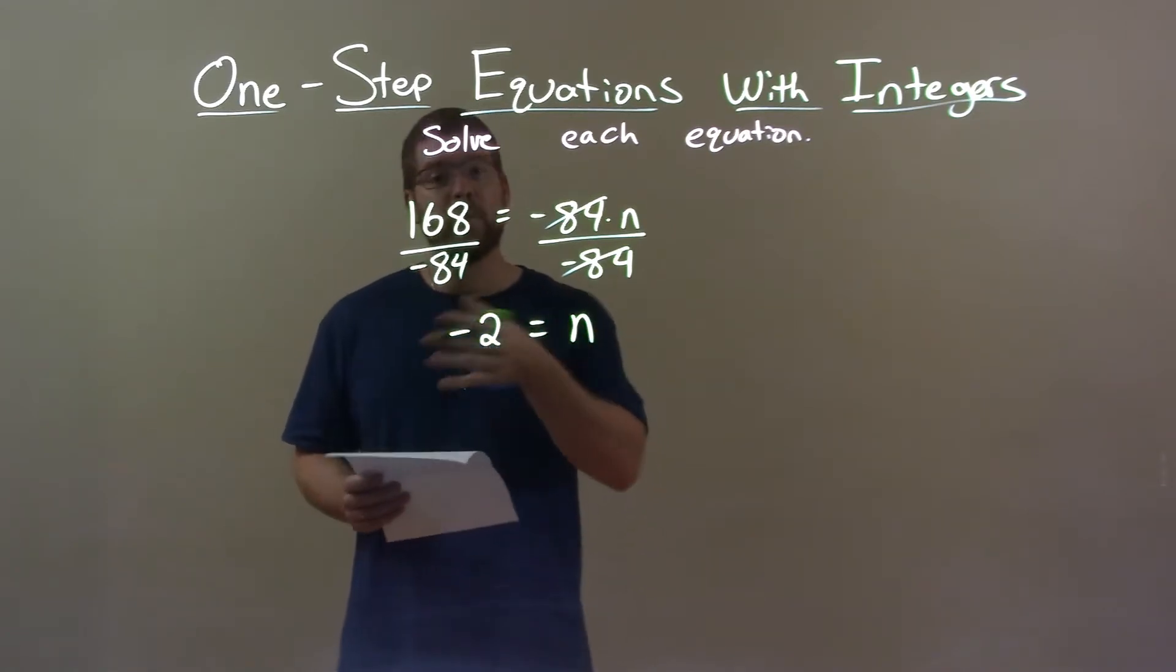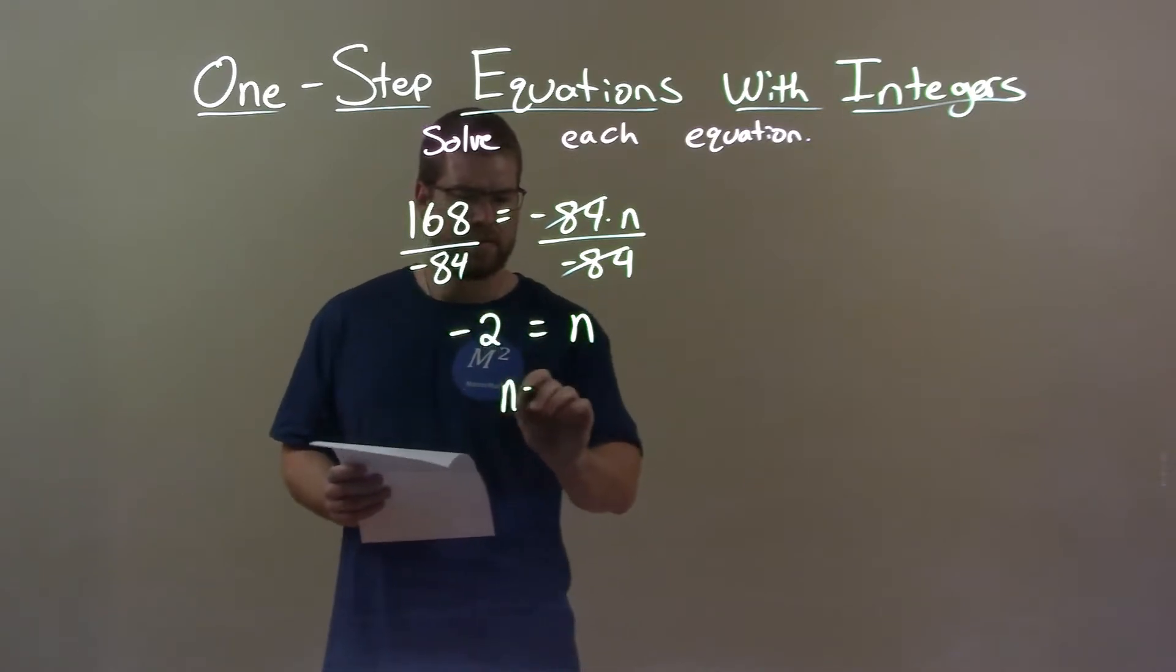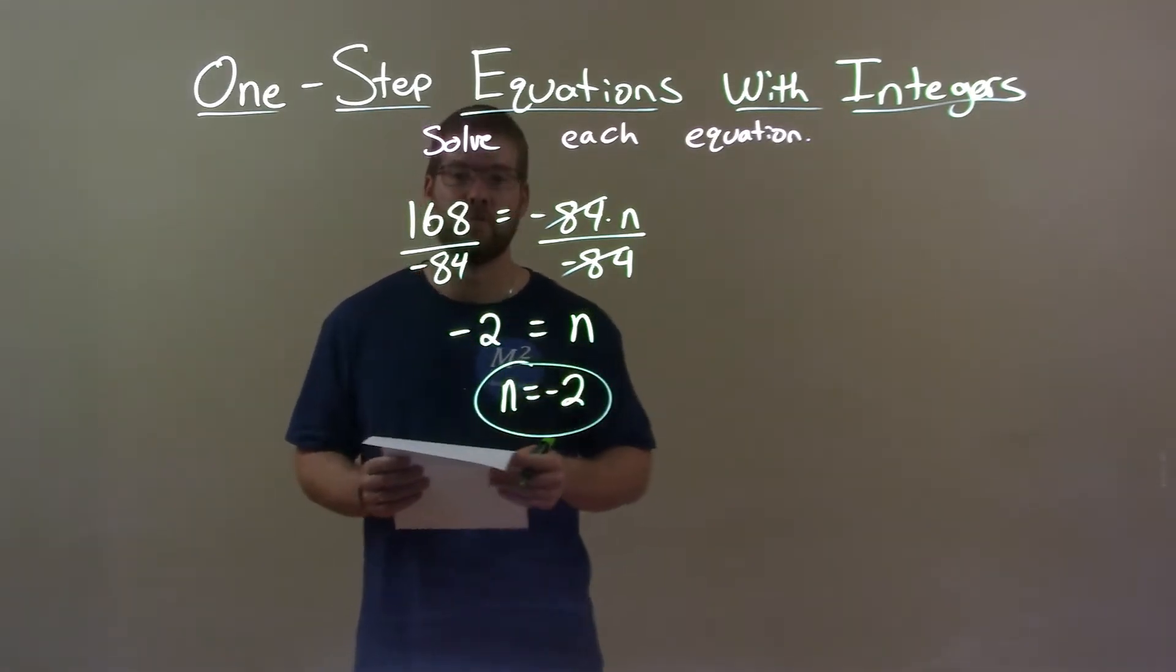So negative 2 equals n, we can put, excuse me, n first, equals a negative 2, and there we have our final answer.